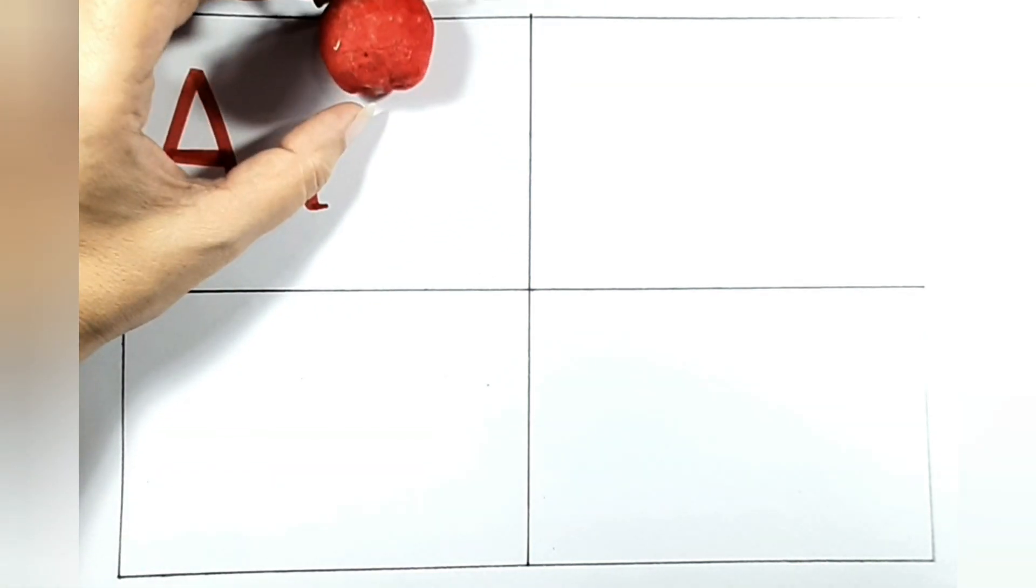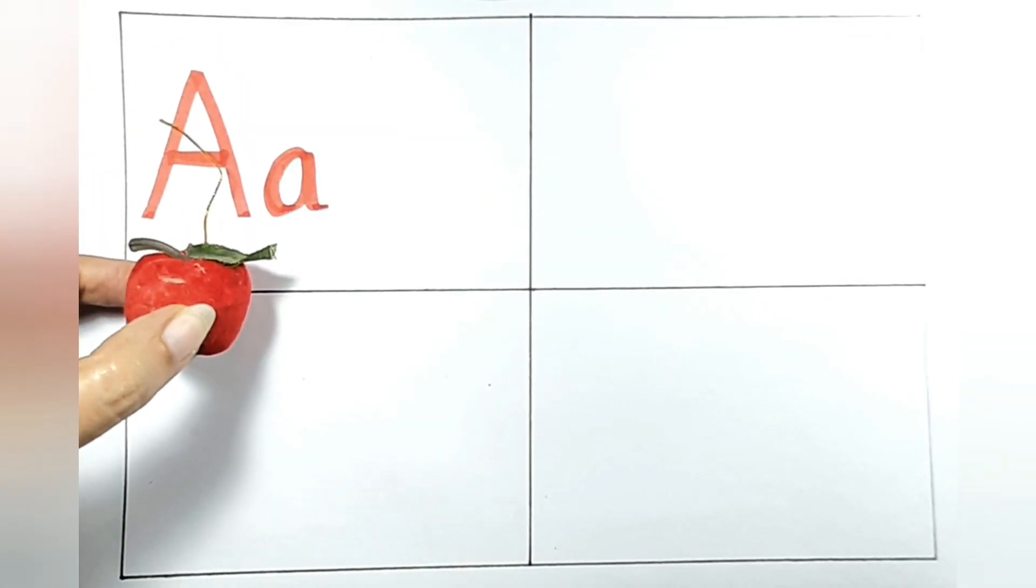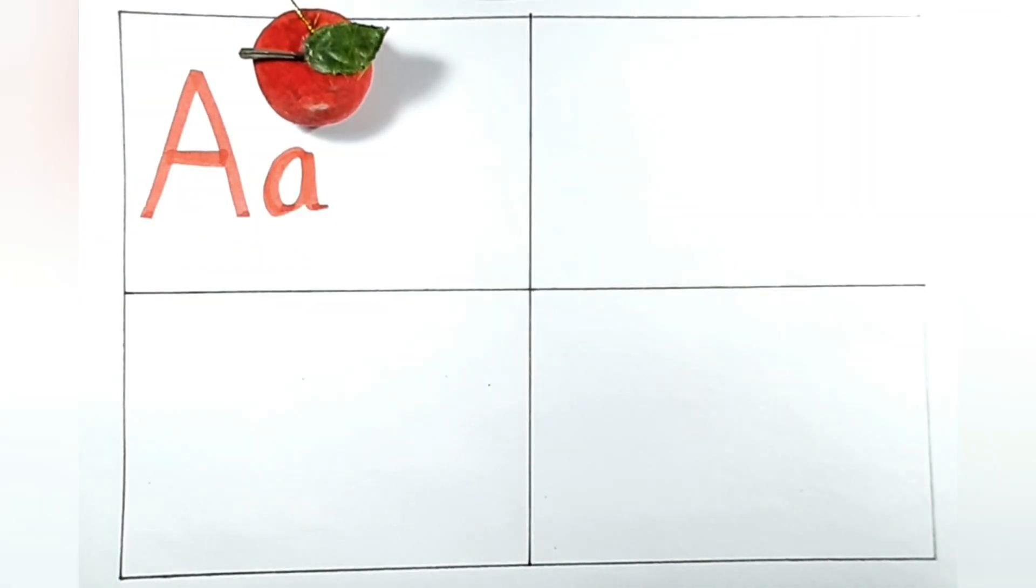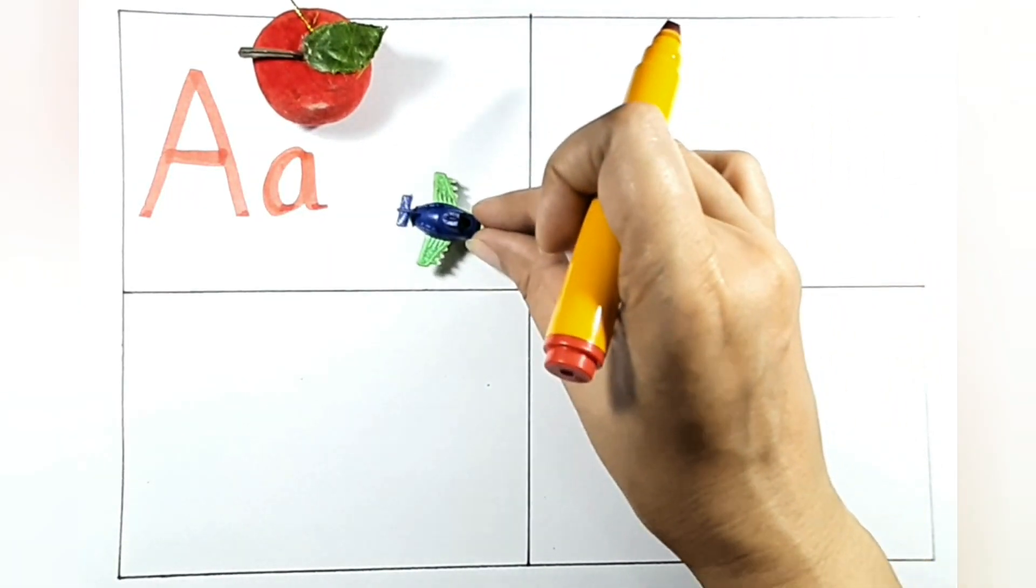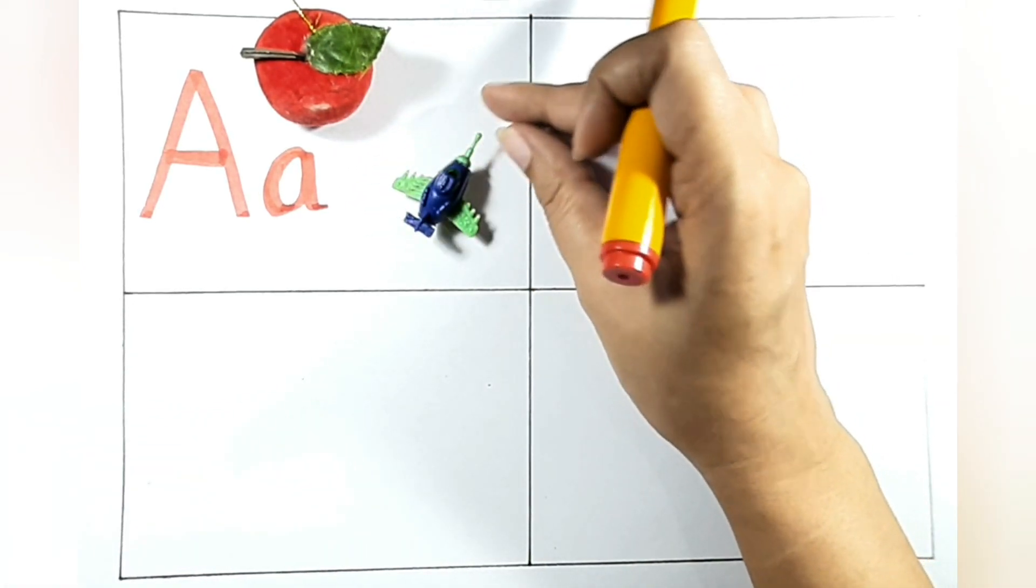This is a for apple. One more thing, we can say it starts from A. The first letter of the word is A. A for apple. This is a for apple. Keep it here. Now something's still coming. Oh, here is an airplane. This is an airplane landed on A.